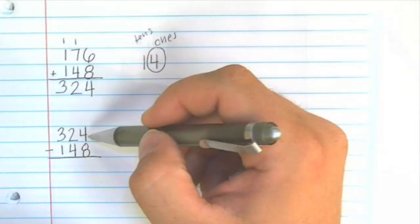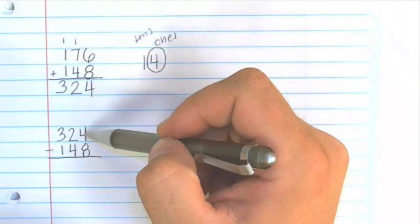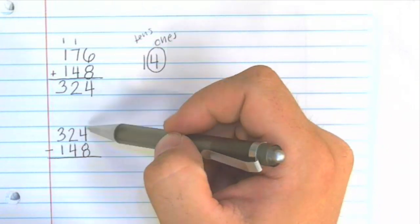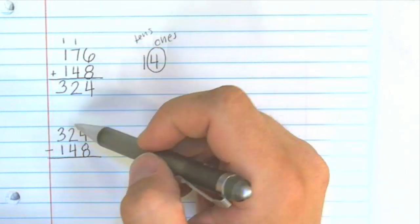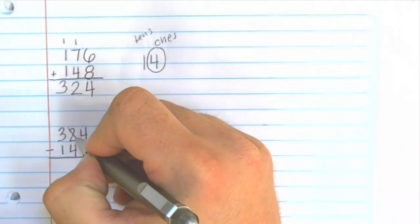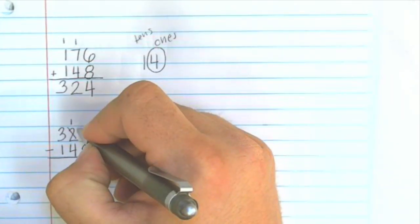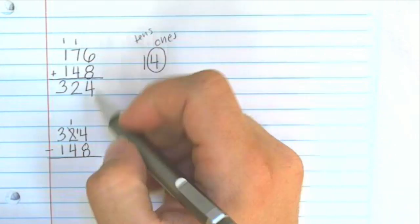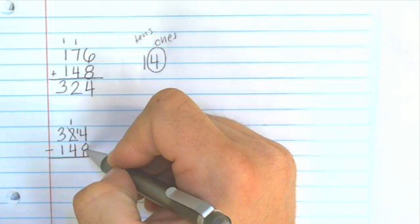So let's subtract this always starting in the ones column again. Four subtract eight, four take away eight, we can't do that. So we need to go next door here and borrow from the two. So we'll cross this two off and the two becomes one and we can put the one that we borrowed here. And so now we have 14 minus eight is six.